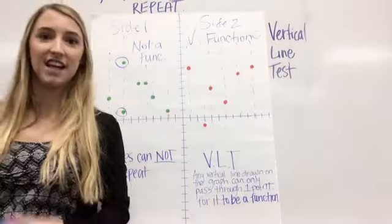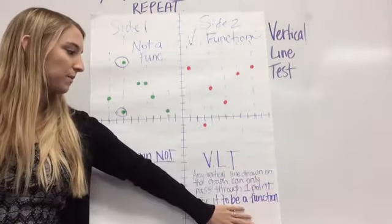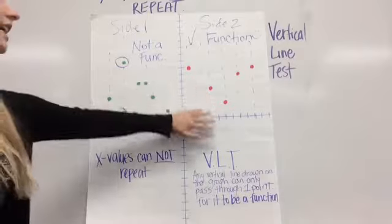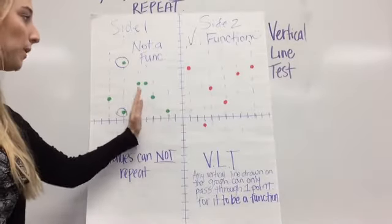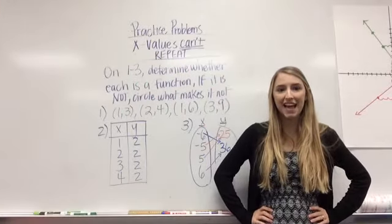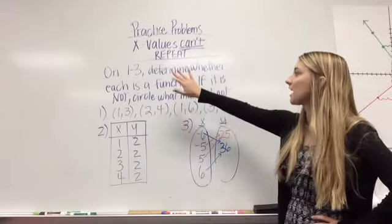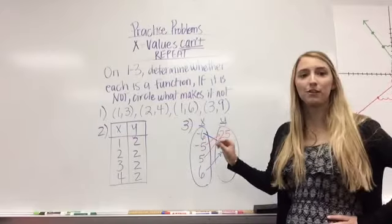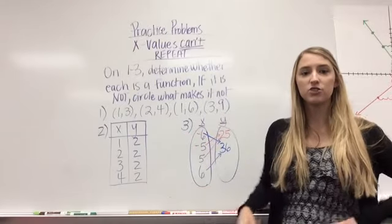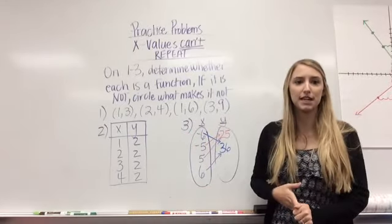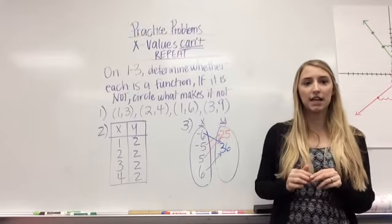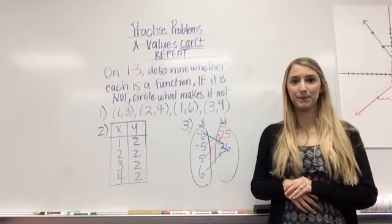Okay? Just copy down again the definition of the vertical line test and how to determine whether a function is, whether a set of points, a relation, is a function or not. Make sure you know how to do it. Okay, these are your practice problems for tonight. The directions, just to be clear, say on numbers one through three, determine whether each is a function. And if it is not a function, circle what makes it not a function. Okay? Those were just like the first three that we did at the beginning of the video. I also circled what made it not a function and it was not. Please take a picture of these and submit them to Edmodo.